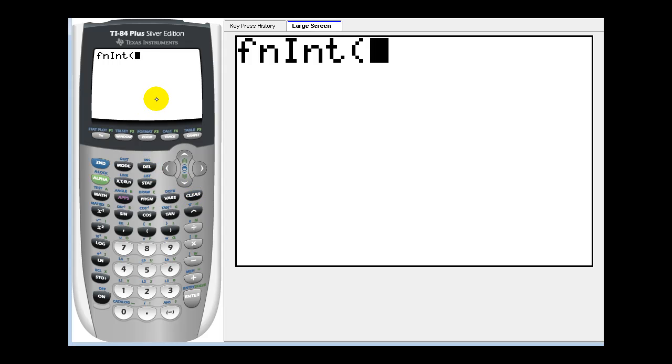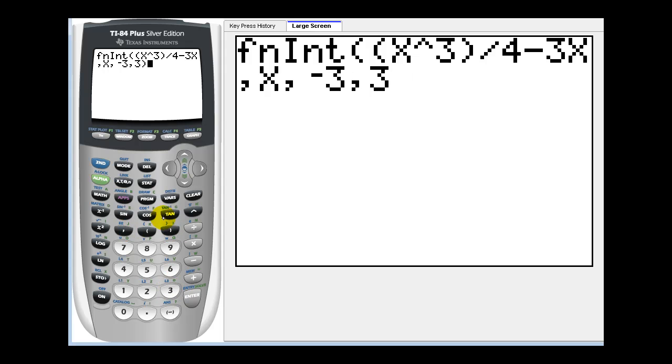Now we type in our function which was x cubed divided by four minus three x, comma the variable of integration, comma the lower limit of integration, comma the upper limit of integration. And this is equal to zero.